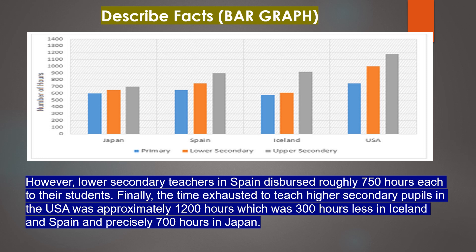Finally, the time exhausted to teach higher secondary pupils in the USA was approximately 1200 hours, which was 300 hours less in Iceland and Spain, and precisely 700 hours in Japan.